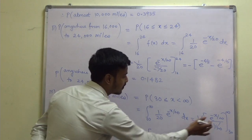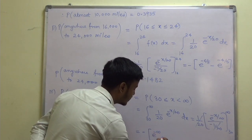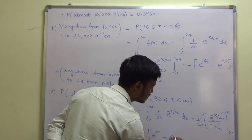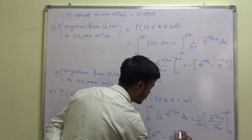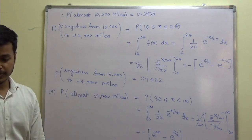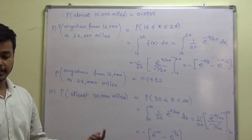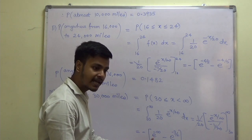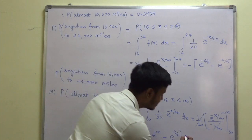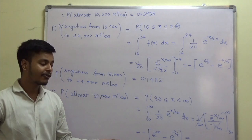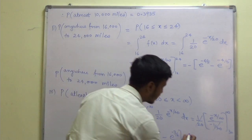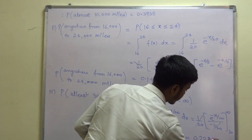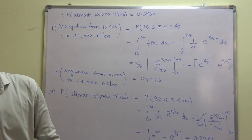Applying the limits: minus of [e^(−∞) − e^(−30/20)]. Remember, e^(−∞) = 0, and −30/20 = −3/2. So we get e^(−3/2) with a positive sign after the double negative. Substituting and computing with a calculator gives the final answer of 0.2231. Being a probability it cannot be negative, and this is the probability for the third part.